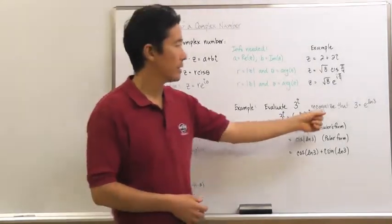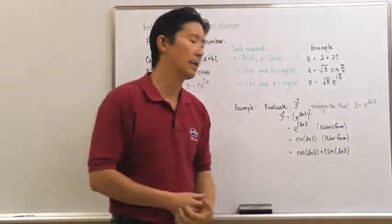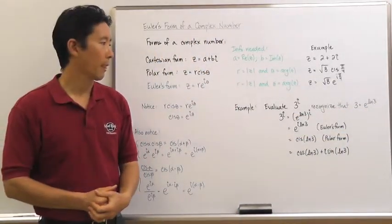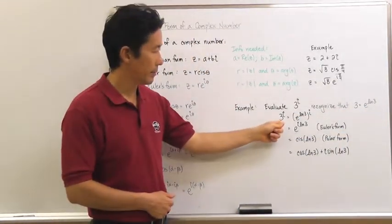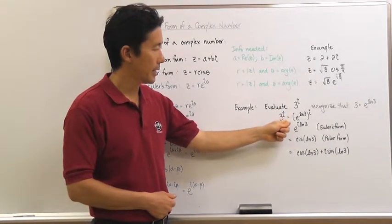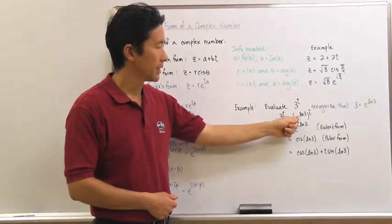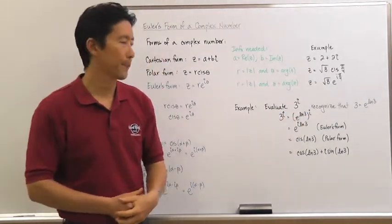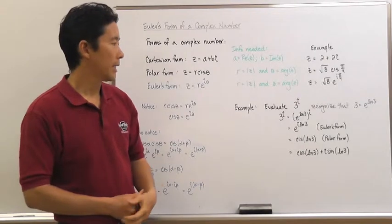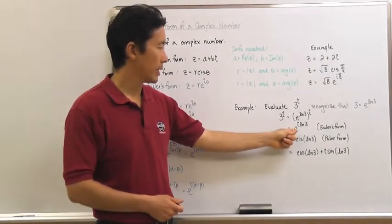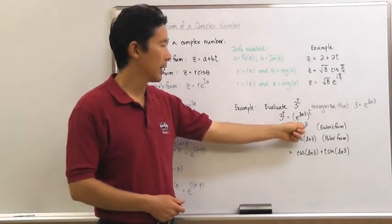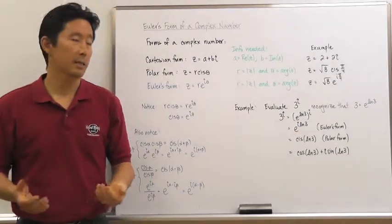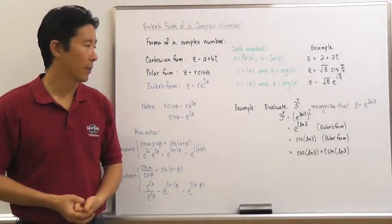One thing we need to recognize is that 3 is equal to e to the natural log of 3. Therefore, we can write 3 to the i as e to the natural log of 3, raised to the i power. Given that, we can write that as e to the i natural log of 3. And what you should notice is that this is now in Euler's form.